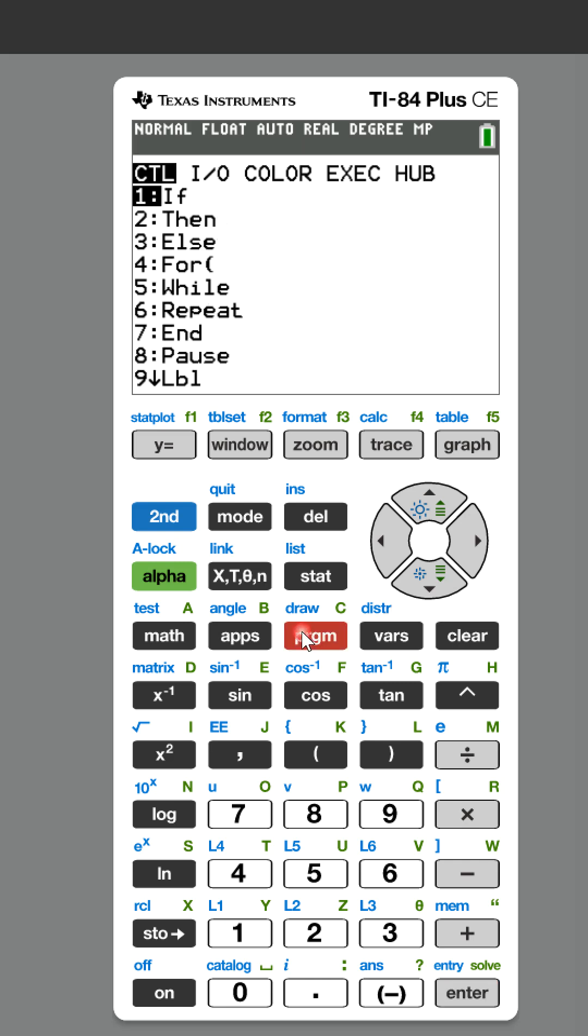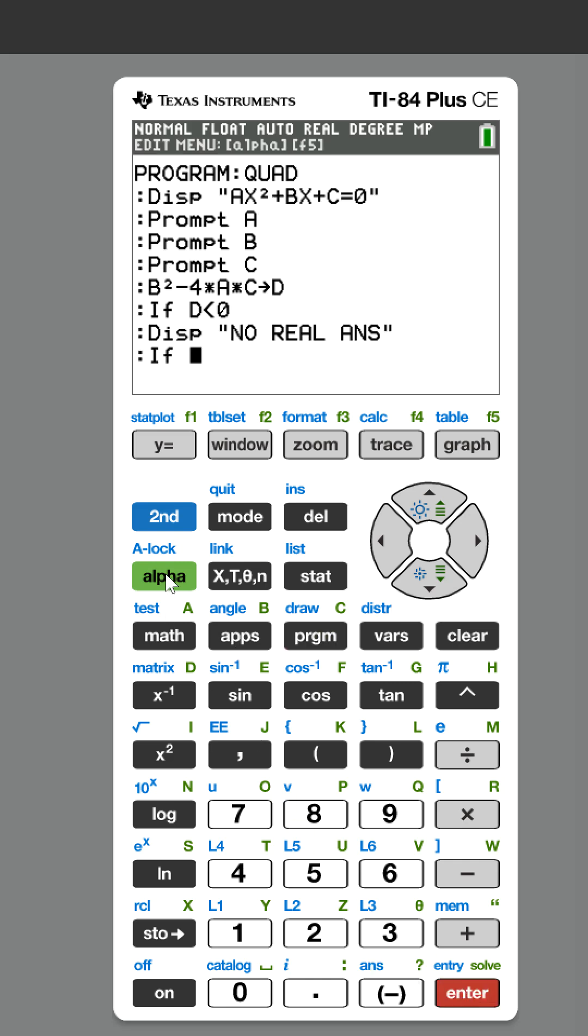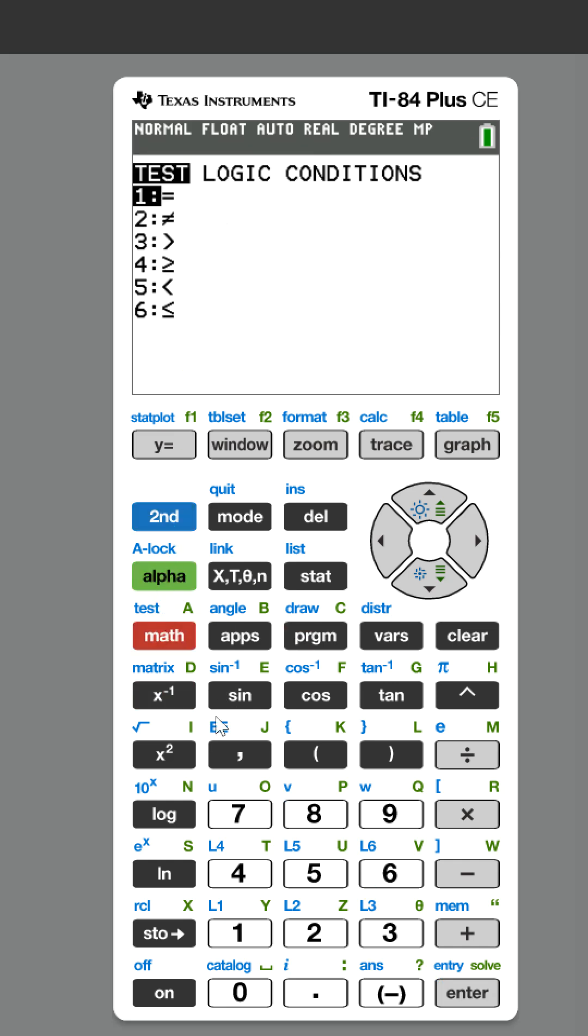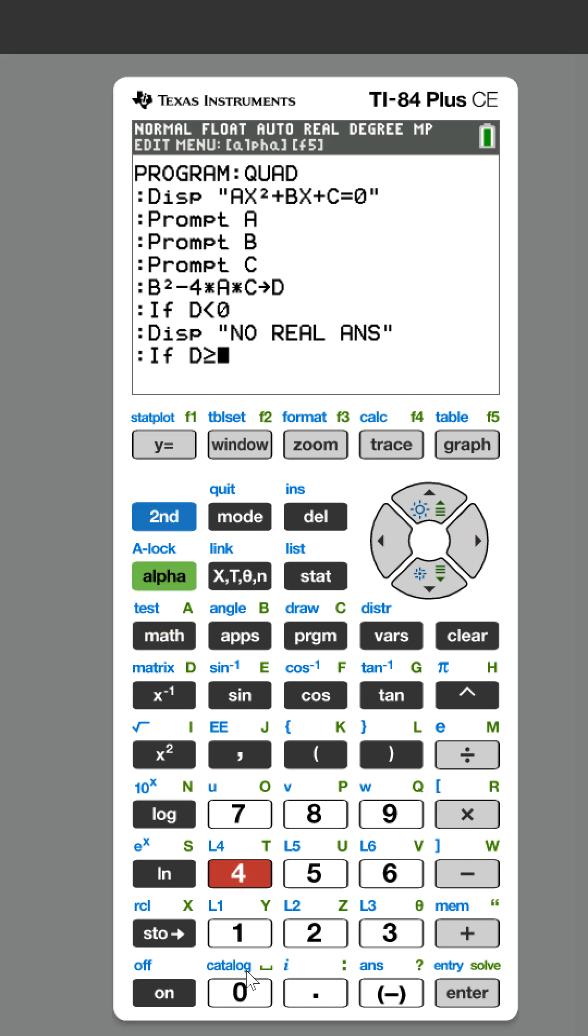And then we're going to do if d, and under the test menu, now we're going to do greater than or equal to. So if we're going to do greater than or equal to zero, then we can actually calculate the formula.